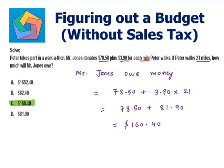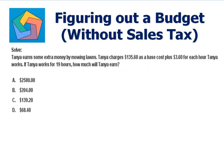That's the answer in part C. Next problem: Tania earns some extra money by mowing lawns. Tania charges $135.60 as a base cost plus $3.60 for each hour Tania works. If Tania works for 19 hours, how much will Tania earn? Again there is a fixed base amount, so we can just consider the earnings of Tania.